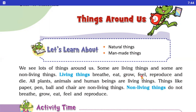Living things unhe kya hoti hai — woh mahsoos kar sakti hai. Living things reproduce kar sakti hai — unka use karke hum koi aur dosri chiz bhi bana sakti hai. Aur living things end me kya hoti hai? Die hoti hai. Jab unki life poori hoti hai to woh die hoti hai, unka samay poora hota hai. Example of living things: plants, animals, and human beings. These are living things.